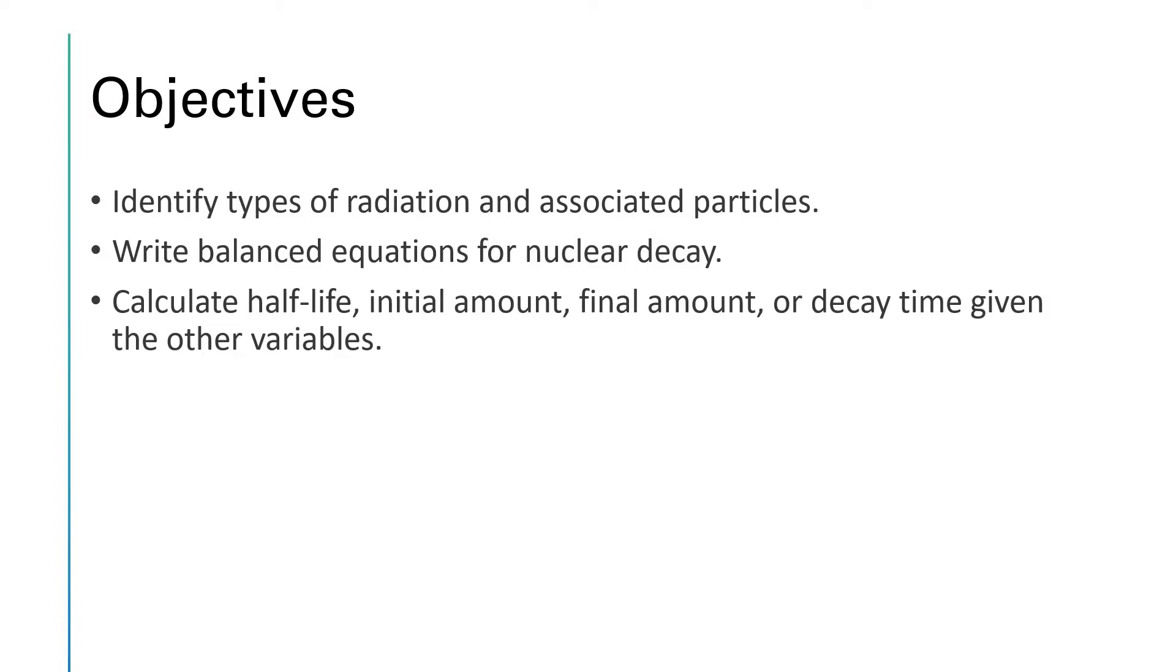Our objectives are to identify the various types of radiation and their associated particles, to write balanced equations for these nuclear decay processes and other nuclear reactions, and to calculate all of the first-order kinetics type stuff like the half-life, the initial amount, the final amount, or the length of time that has passed for a particular process given all of the other variables. Remember to use this list of objectives as a checklist when you're getting ready for the test.